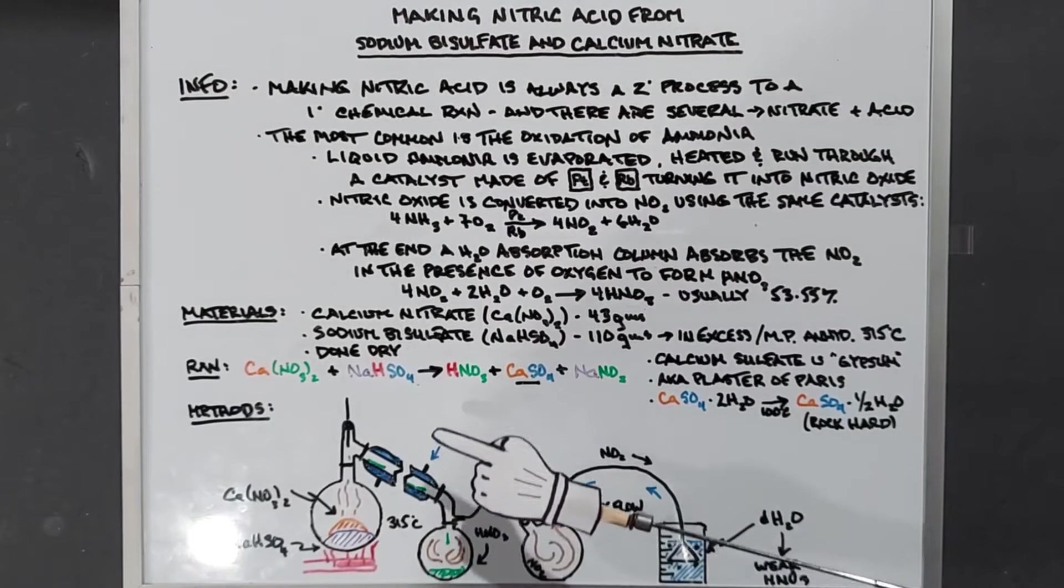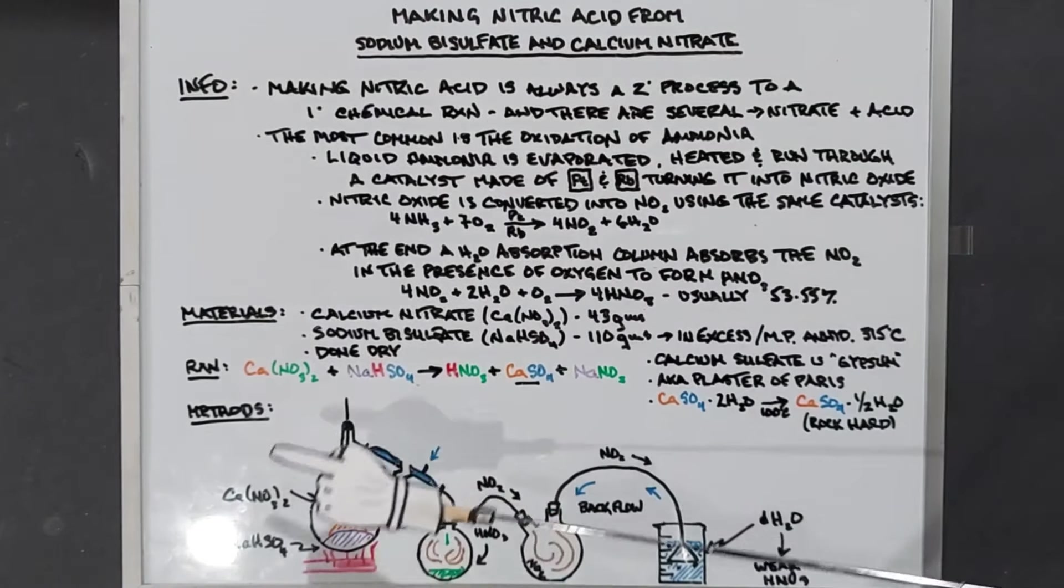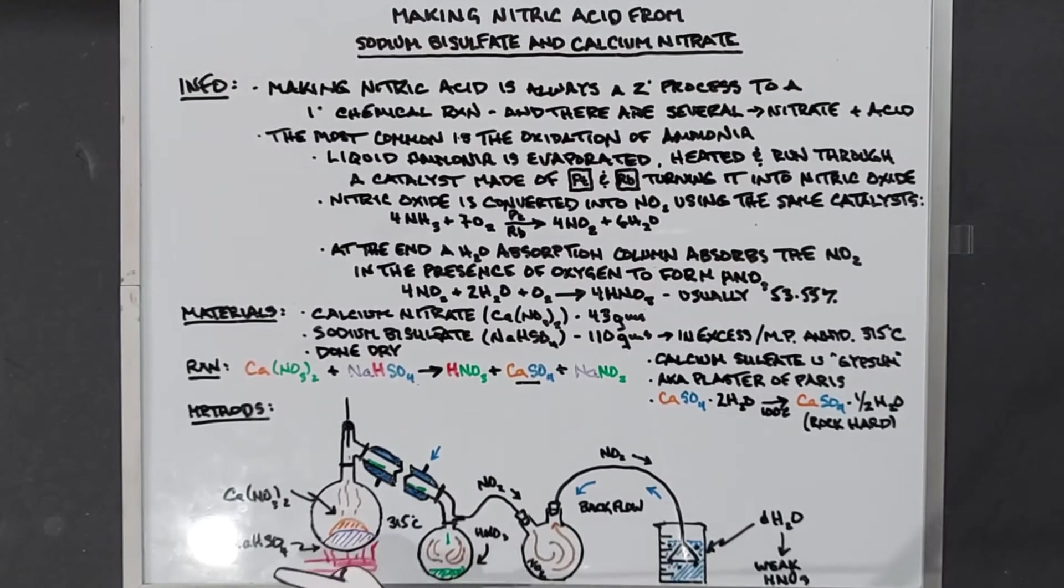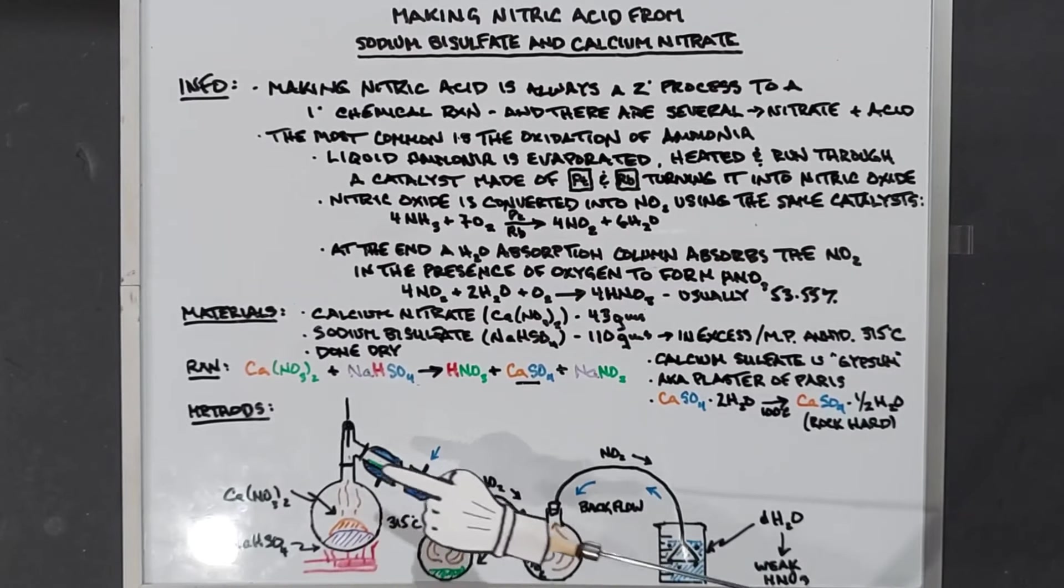For our methods it's pretty straightforward, just a simple distillation. The calcium nitrate and sodium bisulfate will be put in dry. The sodium bisulfate is monohydrate and melts at 315 degrees, and that has to happen for these two to react. So that temperature first needs to be reached, then they'll start to react. Once we distill it over we'll have our nitric acid dripping in here.